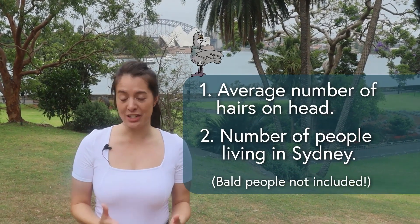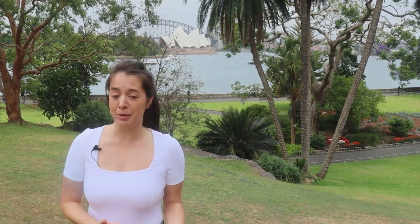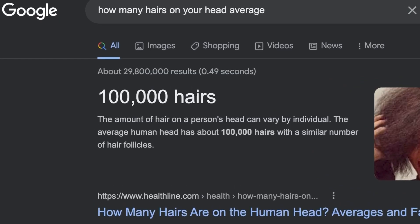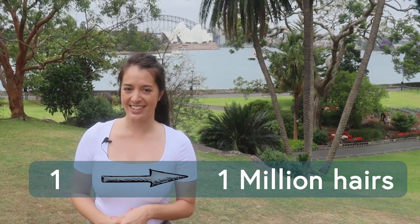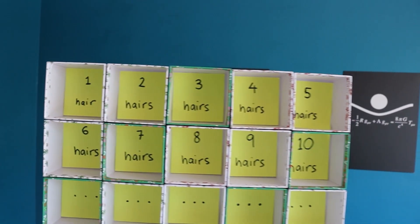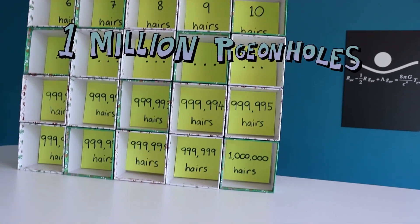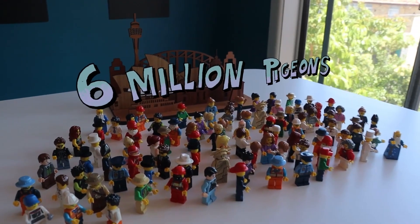To make this interesting, we're going to leave out bald people who have zero hairs on their head, because obviously all bald people have the same number of hairs on their head. So what's the average number of hairs on a human head? According to Google, it's about 100,000. We'll assume that no one in Sydney has more than one million hairs on their head, so we've got a range of one to one million hairs. These will be our pigeonholes. The population of Sydney, Australia is about six million — they will be our pigeons.